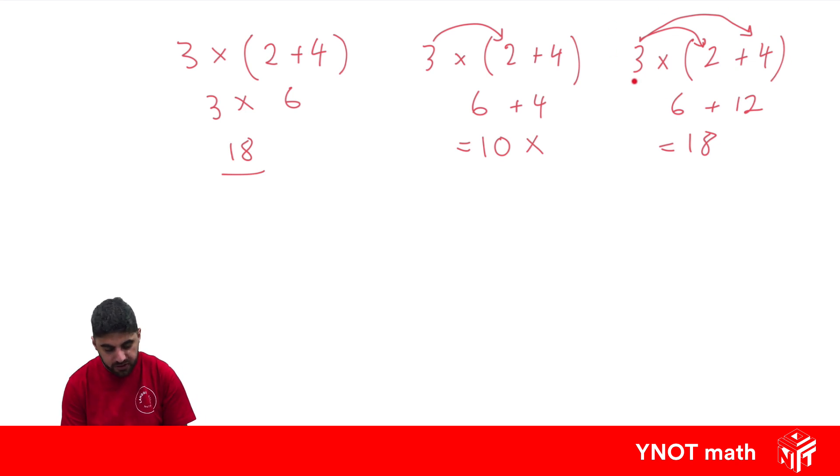So this is what we call expanding brackets. When we have a term outside the front which we're multiplying, we times by everything inside the brackets, and then we can add them together.